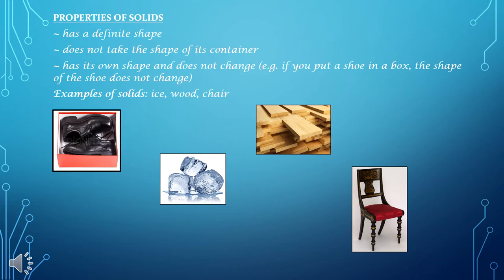Let us look at the properties of a solid. A solid has a definite shape. A solid will not take the shape of the container that it is put into. A solid has its own shape and it will not change shape. For example, if you put a shoe in a box, the shape of the shoe does not change — it remains the same.